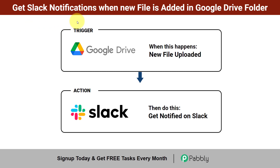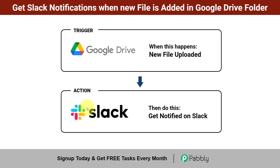In this video I will show you how to get Slack notifications when a new file is added in a Google Drive folder automatically. Assume that someone from your team has just uploaded a file or a design into Google Drive. Once uploaded, they would normally text you in a Slack channel saying 'I have just uploaded a design, you can check it and let me know the changes.' But what if you could entirely automate this process?